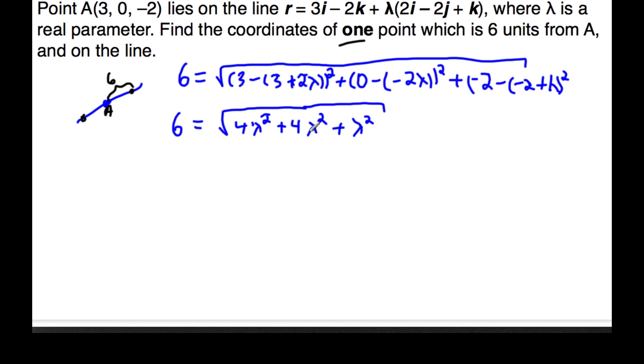4 plus 4 plus 1 is 9λ squared, square root of that is 6, squaring both sides, 36 is 9λ squared, divide by 9, 4 is λ squared, that means λ is plus or minus root 4, plus or minus 2.